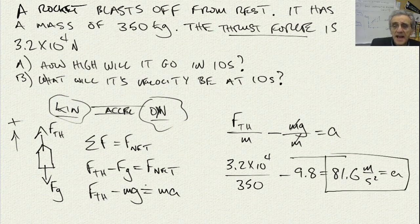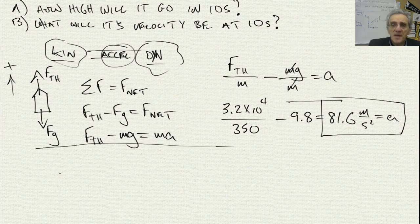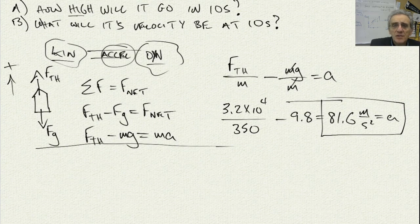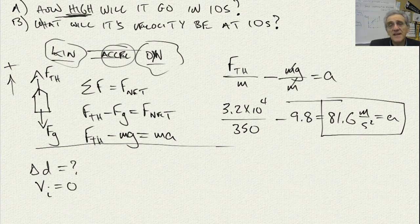Now that I have my acceleration, I can move over to my kinematics problems and say, how high will it go? That's a delta D problem. I'll write down the variables that I'm looking for and also what I'm given. I know that it blasts off from the ground, so my initial velocity is zero. I don't know my final velocity. I'm going to find that out in part B.